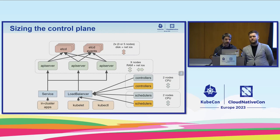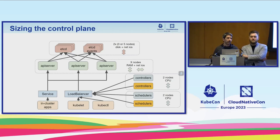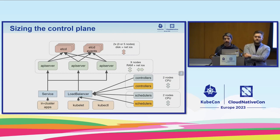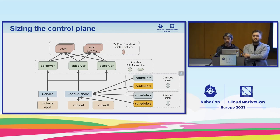HCD also needs quite significant network throughput, because when API servers start and fetch resources from HCD, the volume of data to transfer can be significant. So HCD nodes need fast disk and fast network. API servers can scale horizontally, but as the cluster gets bigger, they still need to cache everything, so you'll need to increase memory for each API server. Controllers and schedulers are easier to scale because they mostly consume CPU — give them a significant amount of CPU and you'll be good.